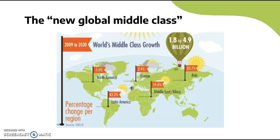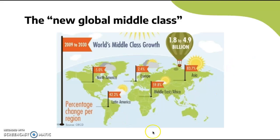The largest growth is in Asia, followed by Middle East and Africa, followed by Latin America. North America and Europe have a fairly low and actually negative growth, probably because their economies aren't growing as fast. In Asia and Latin America we have a lot of developing countries — like the BRICS — that are growing economies, whereas North America and Europe are more HICs and not growing as fast.